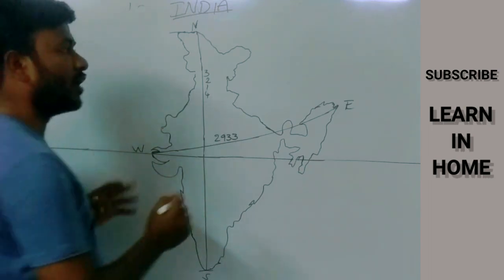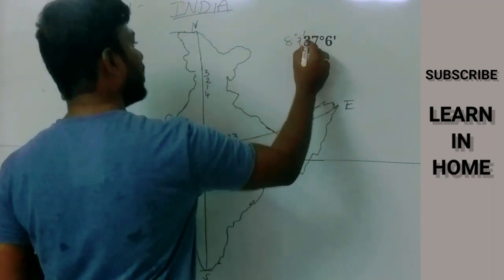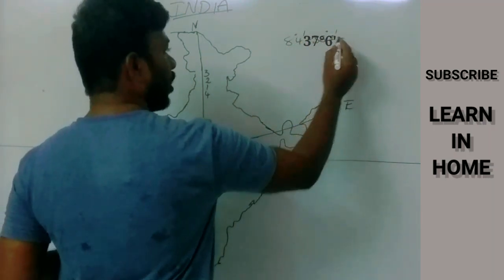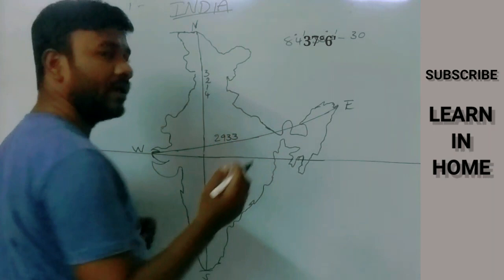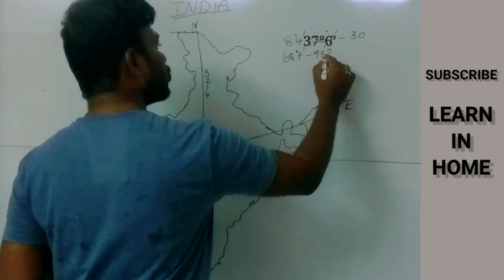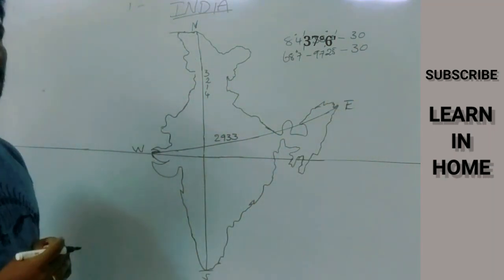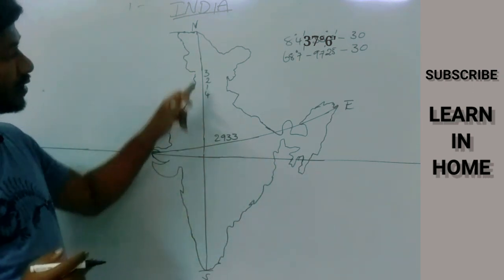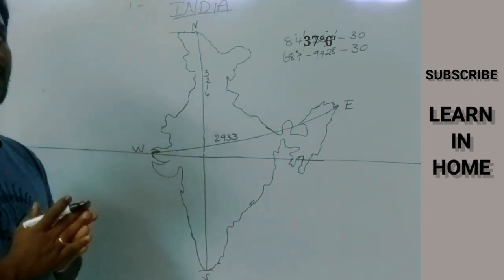Now the question is: even though India has approximately the same number of latitudes — about 30 — and the same number of longitudes — about 30 — why is the north-south distance larger than the west-east extent? This is the key concept we need to understand.